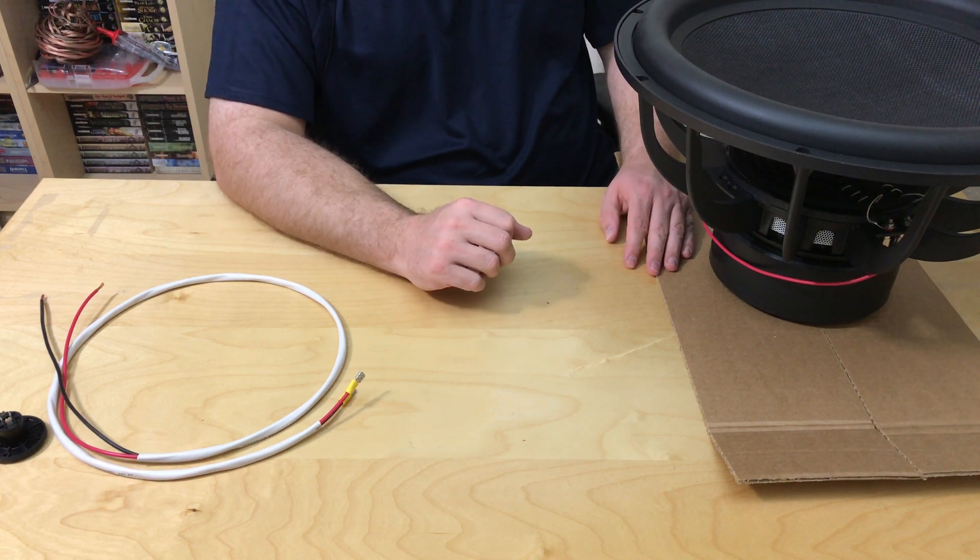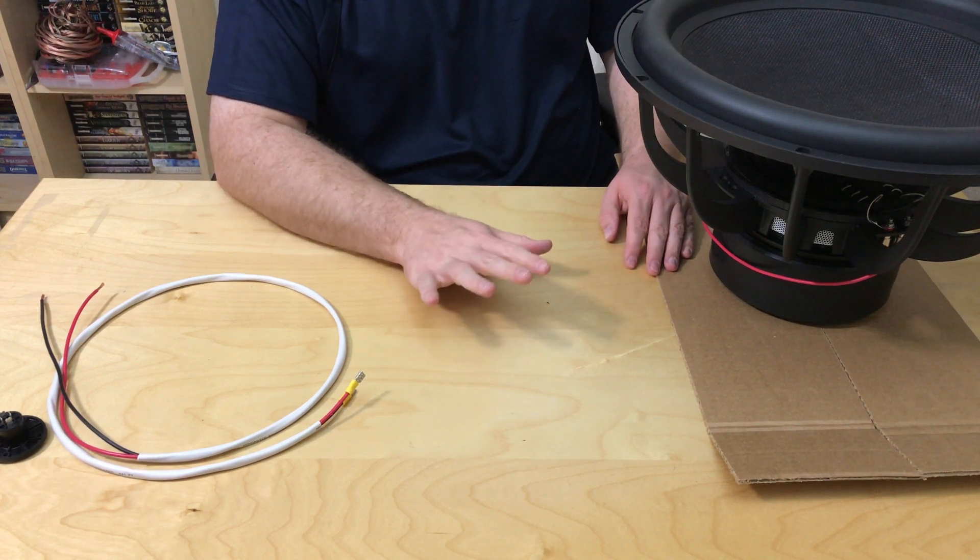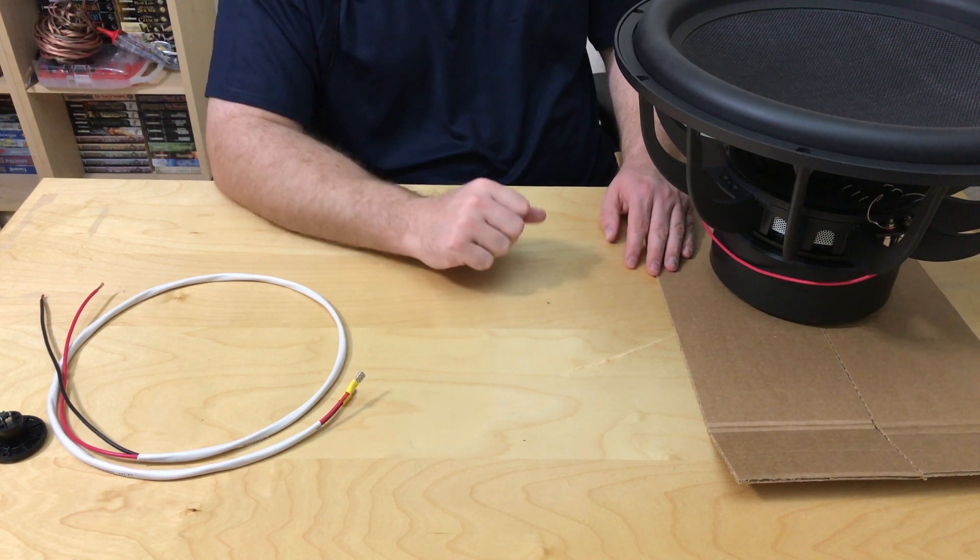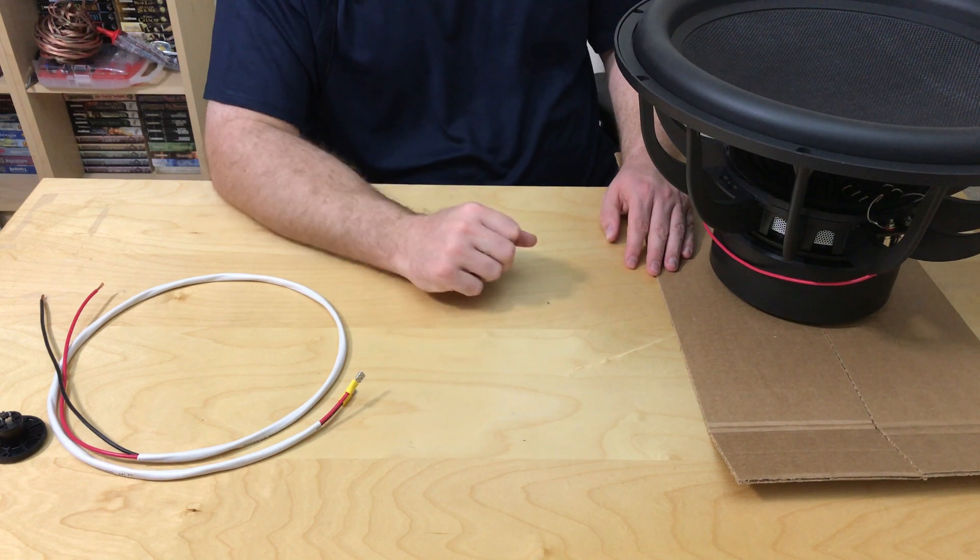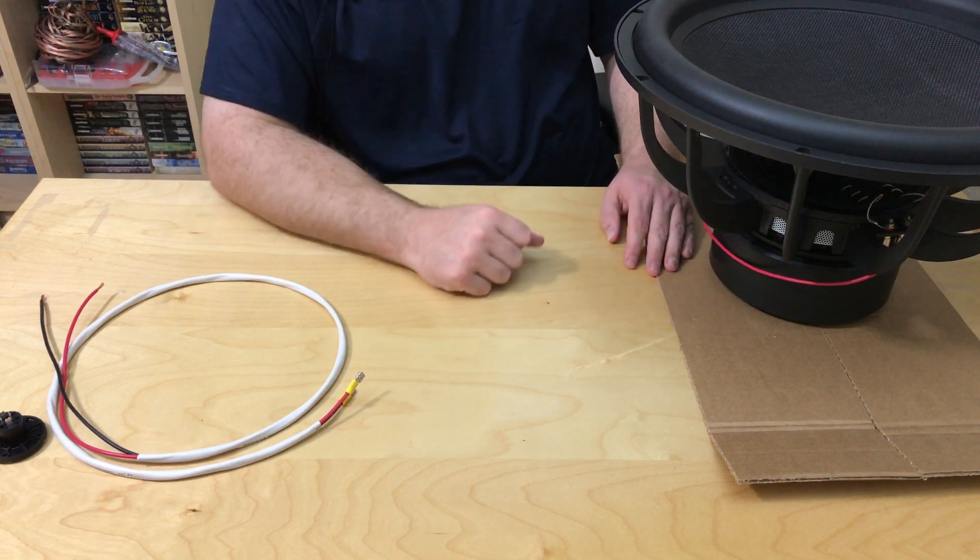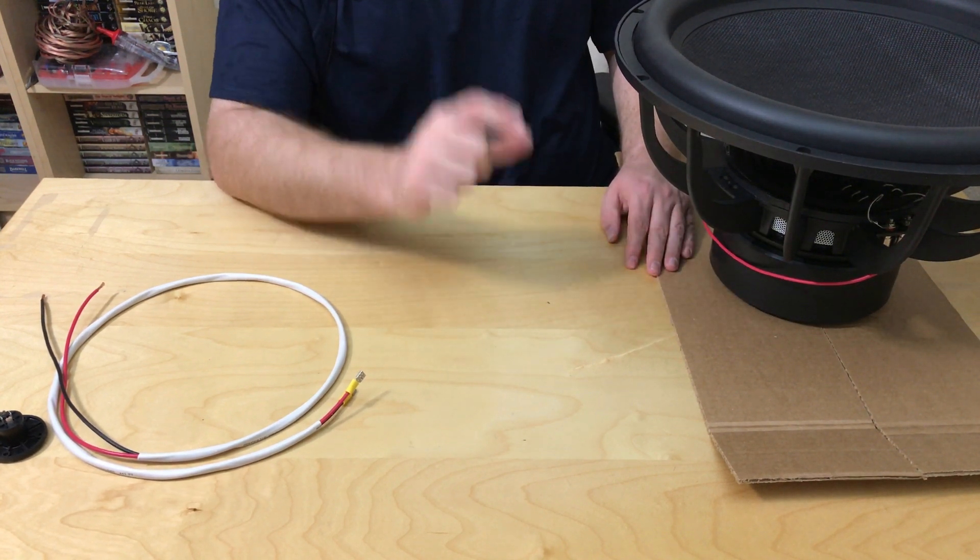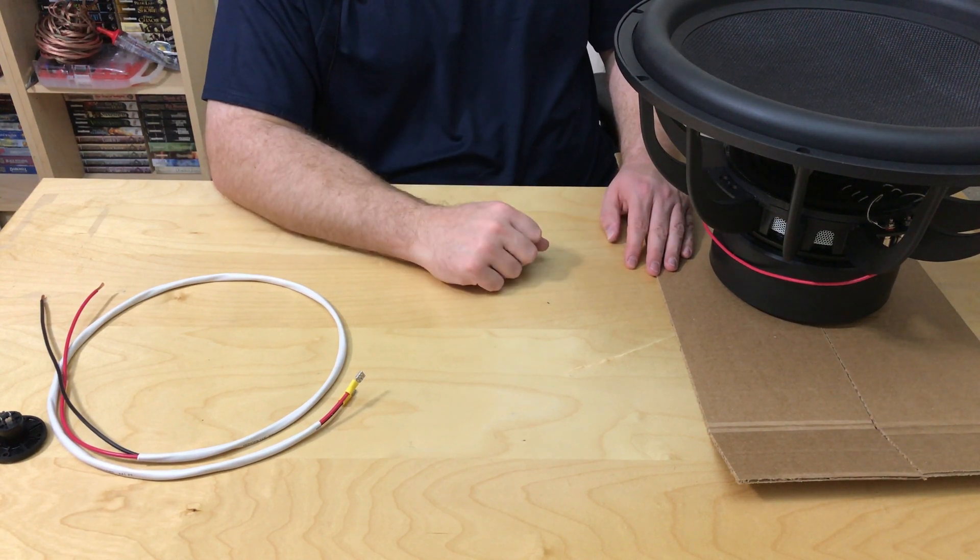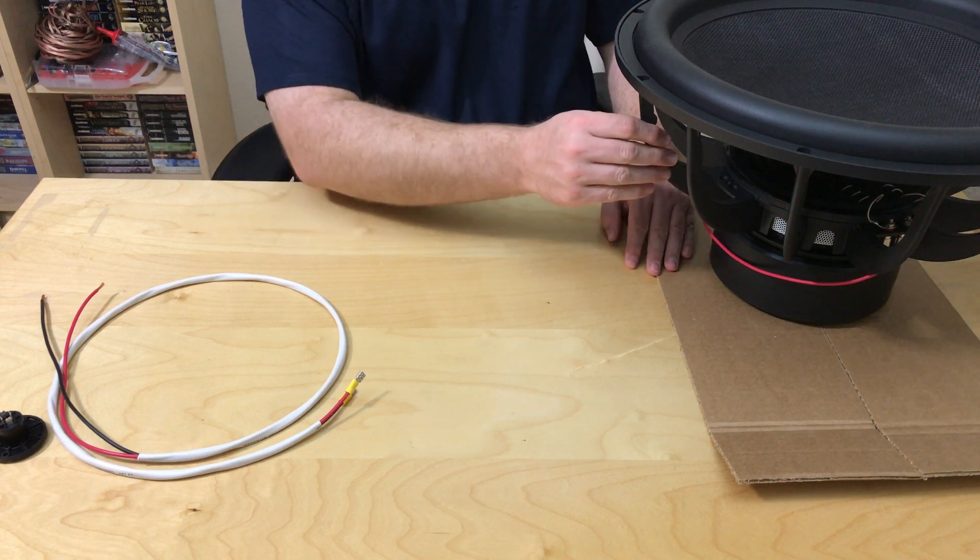In parallel, the goal there is to lower the ohm load that the speaker presents to your amplifier to get more juice out of your amplifier. However, if you take these two 2 ohm voice coils and wire them in parallel, you're going to come out with a 1 ohm load. And that's fairly difficult for most amplifiers to be able to handle.